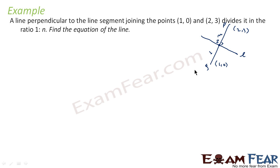Since this point is divided in ratio 1 to n, we can find S. And since we can find the slope of line PQ, we can also find the slope of L because PQ is perpendicular to L. So first, find the slope of L and the point S.